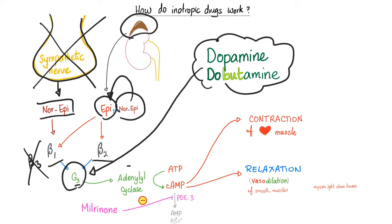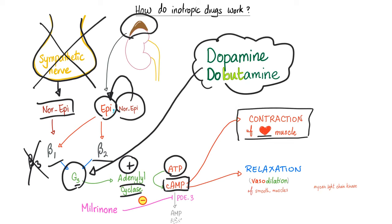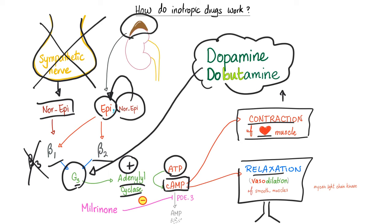Cyclic AMP will do lots of stuff depending on the tissue. In cardiac muscle: increase contractility. In the SA node: increase heart rate. In smooth muscles: relaxation — dilation of bronchi and blood vessels. In the juxtaglomerular cells of the kidney: secretion of renin, which converts angiotensinogen into angiotensin I.